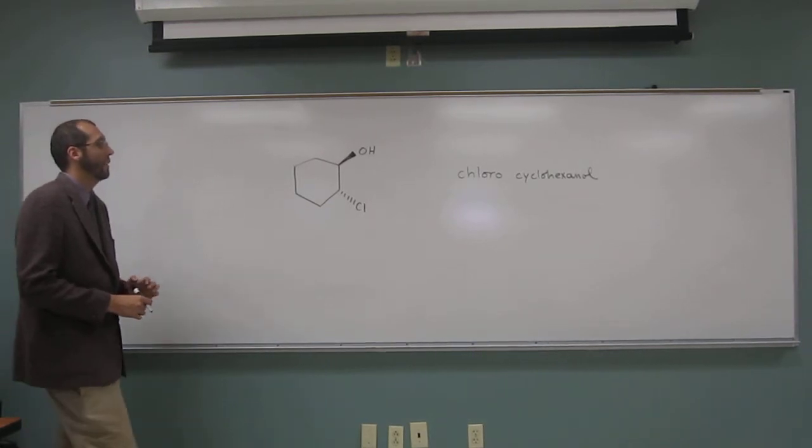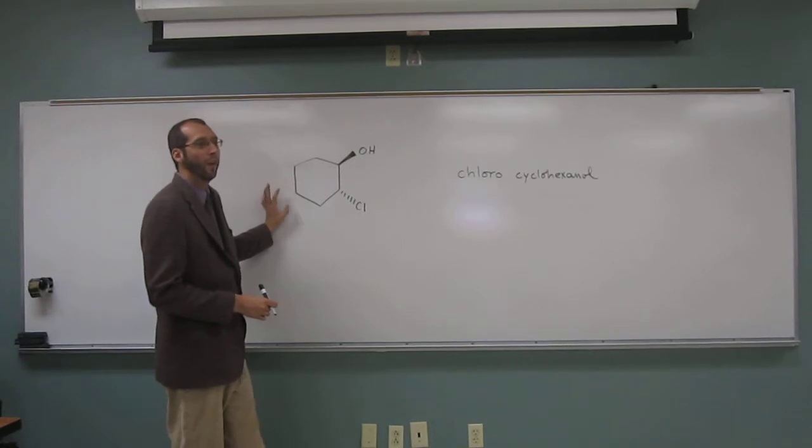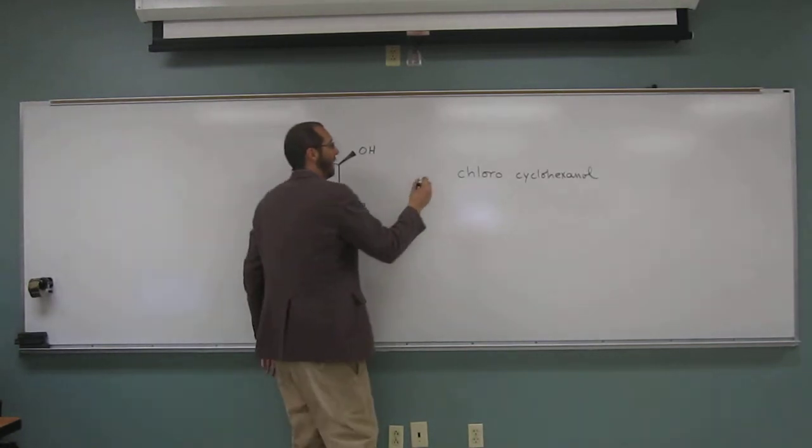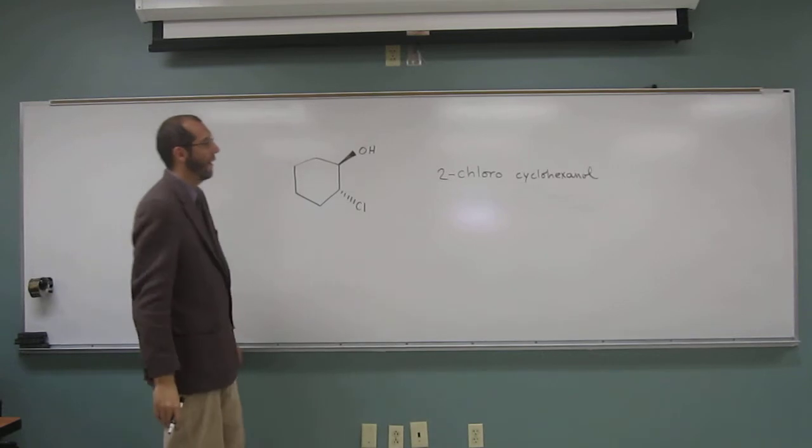So you're naming it as cyclohexanol, so the alcohol has to be on carbon one. Not three, two. Okay, is that the right name of it?